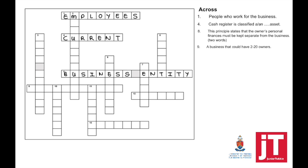Question number nine: a business that could have two to twenty owners is called a partnership. It is important to understand that there's a difference between form of ownership and the type of business. When we're talking about form of ownership, we're talking about either a sole trader, a partnership, or a company. One of the characteristics of a partnership is that a business could have a minimum of two and a maximum of twenty owners.